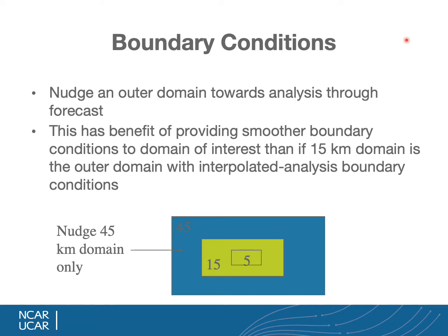The third application is boundary conditions, where you nudge an outer domain towards analyses through the forecast. This provides smoother boundary conditions to the domain of interest. For example, if a 15 km domain is the domain of interest, a 45 km domain is added outside, which can be thought of as a very wide boundary zone. It also has high time resolution because the model runs with its own time step, so features coming into the 15 km domain have better time resolution than if the 15 km domain were the outer domain.